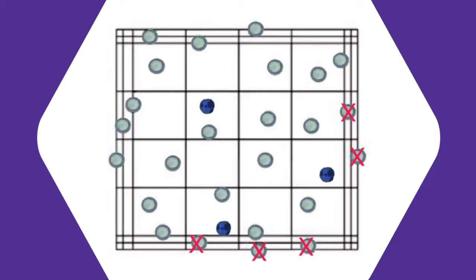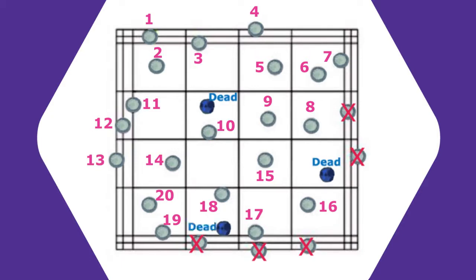Now we'll count the live and dead cells. In this example, we have 20 live cells. And based on Trypan Blue staining, we have three dead cells.